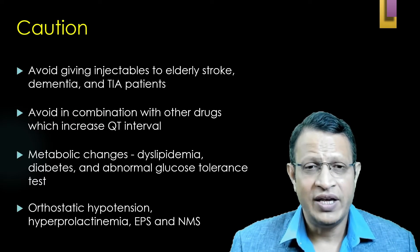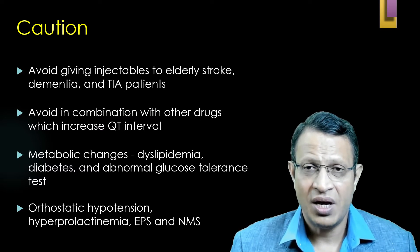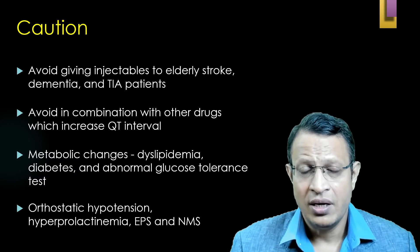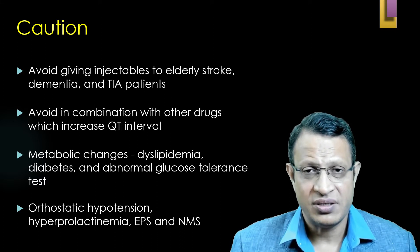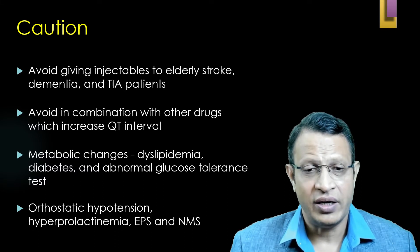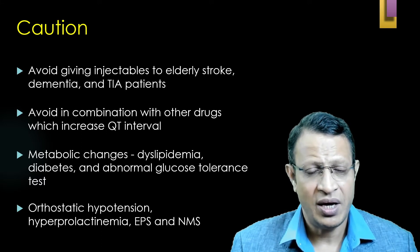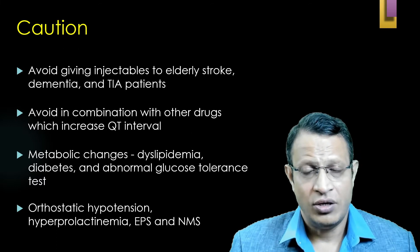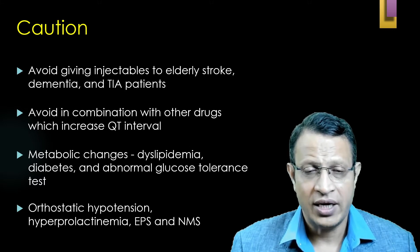You need to be cautious. Avoid giving injectables — especially paliperidone — in elderly stroke patients, dementia, and elderly TIA (transient ischemic attack) patients. Avoid combination with medications which increase the QTc interval. You need to keep monitoring with regard to metabolic changes such as abnormal glucose intolerance, dyslipidemia, or diabetes. These long-acting injectables can cause orthostatic hypotension, EPS, and rarely NMS or hyperprolactinemia.